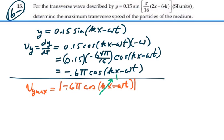So really our maximum value is just going to be omega times a. In terms of value, 0.6 pi meters per second, or 1.88 meters per second.